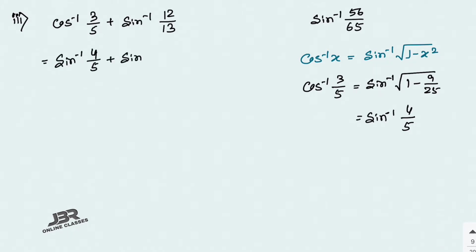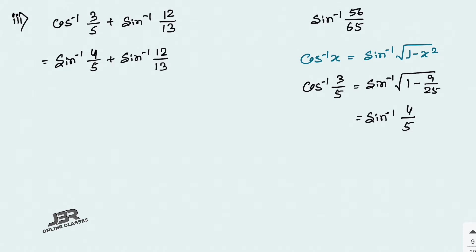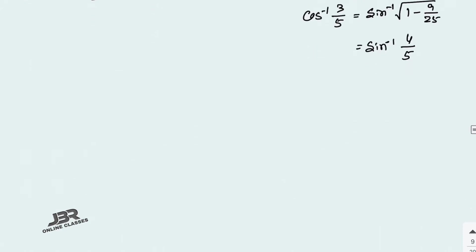Now we can easily apply the formula sin⁻¹(x) + sin⁻¹(y) to get sin⁻¹(56/65), which is the required answer. I hope you can solve this one. Now let's move on to sum number 4.